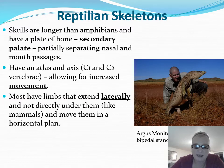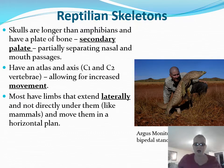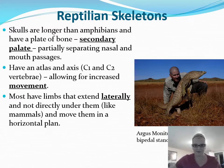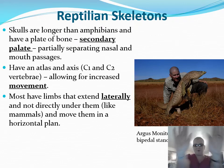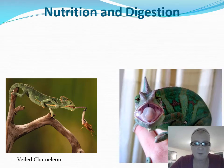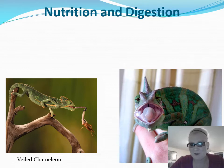Their limbs extend laterally — a little more outward instead of directly underneath. Like a dog or cat has limbs directly underneath, reptile limbs are more off to the side. Some primitive reptiles were bipedal, meaning they walked on only two legs. This still occurs today — geckos will actually get up on their back two legs and run — but it's mostly seen in ancestral species.